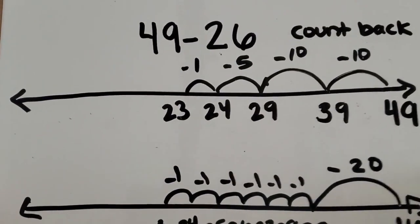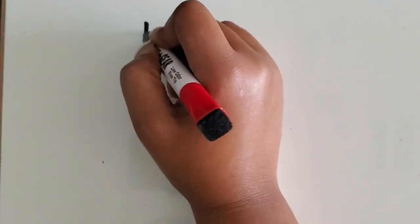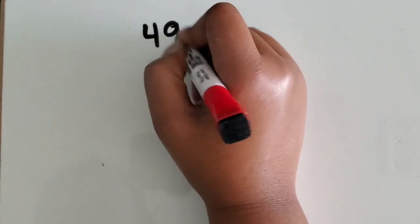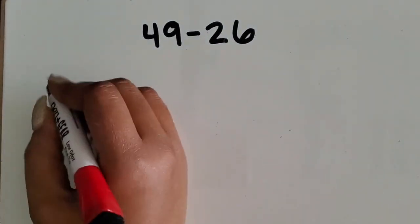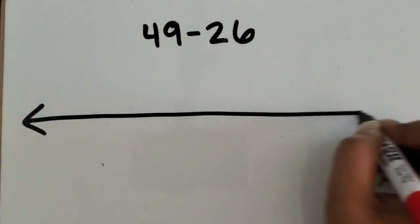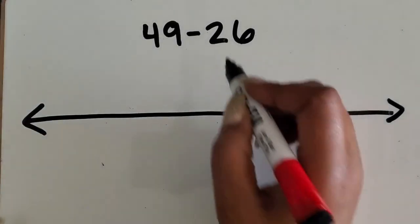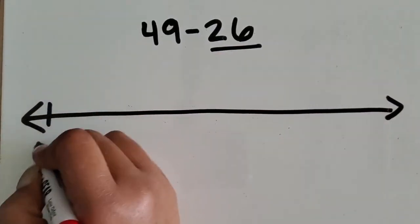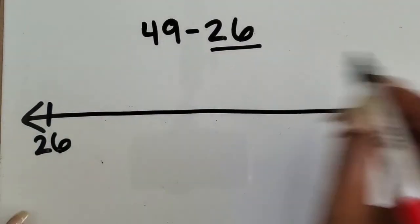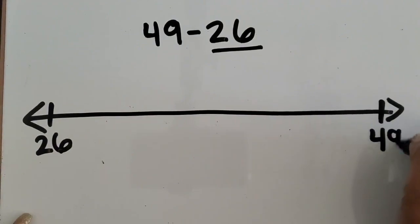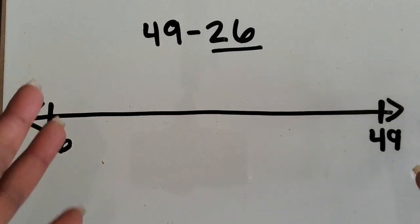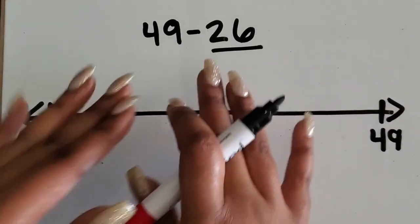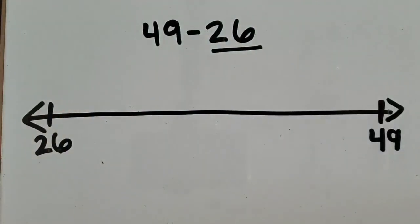Now I want to show you how to subtract on the number line by counting up. We have our same expression, 49 minus 26. I'm going to draw my open number line. This time I'm going to start with the smaller number, 26. I'm going to place the larger number here. I want to find the difference. I want to find the distance. This is really visualizing what subtraction is. The distance or difference between the two amounts.